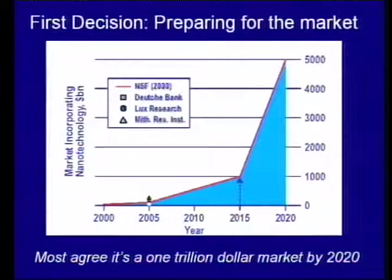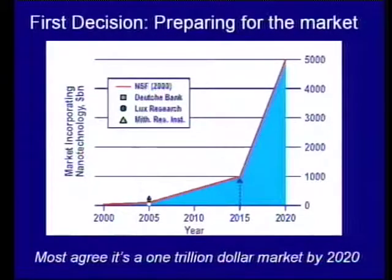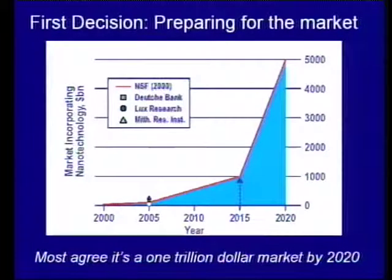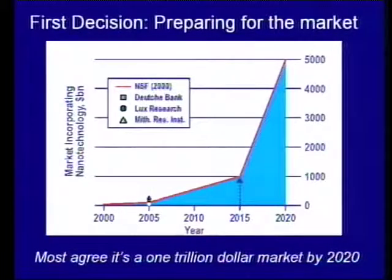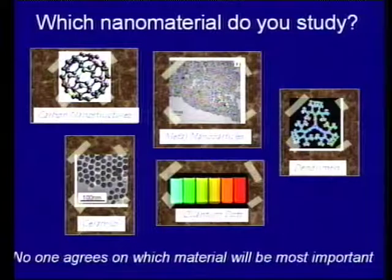The first challenge in doing risk research before you have a technology is shown in this graph. Various studies project that nanotechnology markets will exponentially grow — we're at the beginning of it taking off. But one of the challenges, if you're going to a lab to study what happens with nanoparticle exposure, is figuring out what your exposure is going to be. While you know there's a big market, what exactly will that entail?